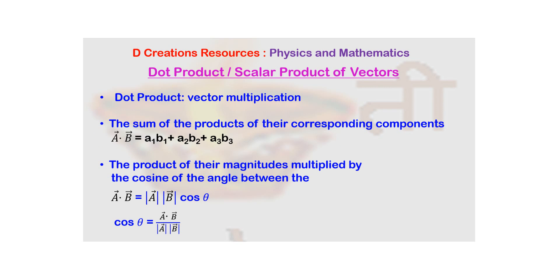But actually the other name, that is scalar product of vectors, is a more suitable name because it tells you what is going to be the nature of the final answer that you get. So in fact it is a number or a scalar, you will see how.